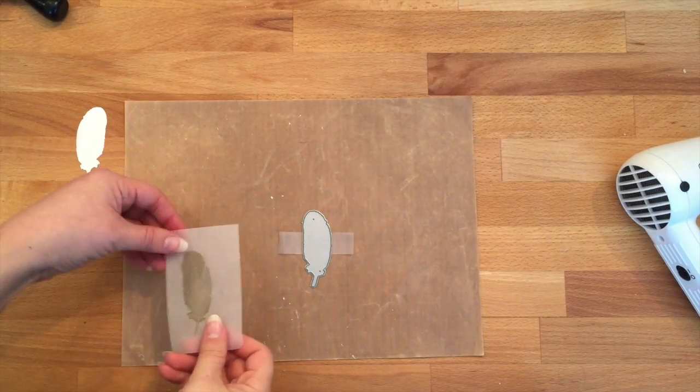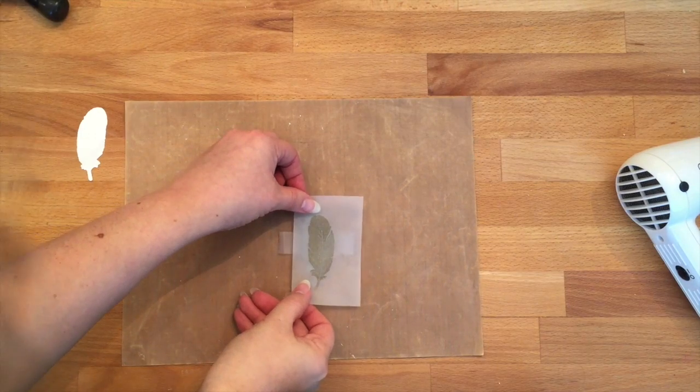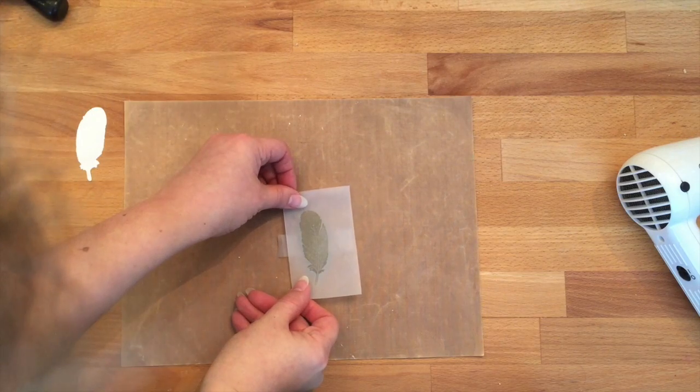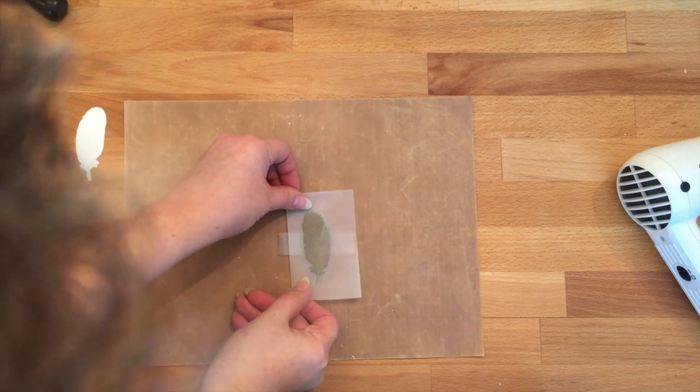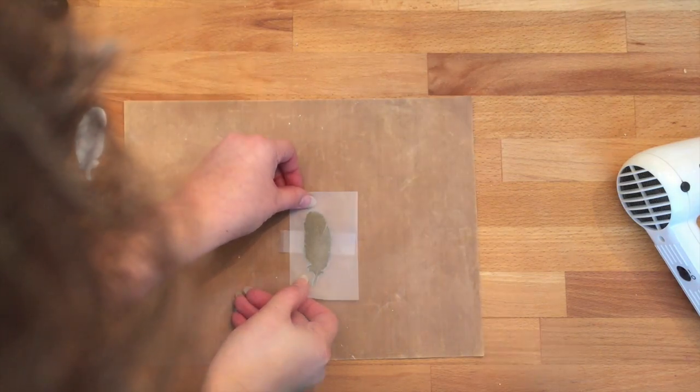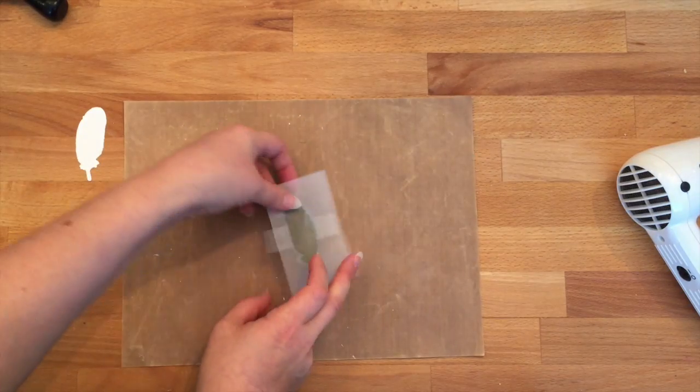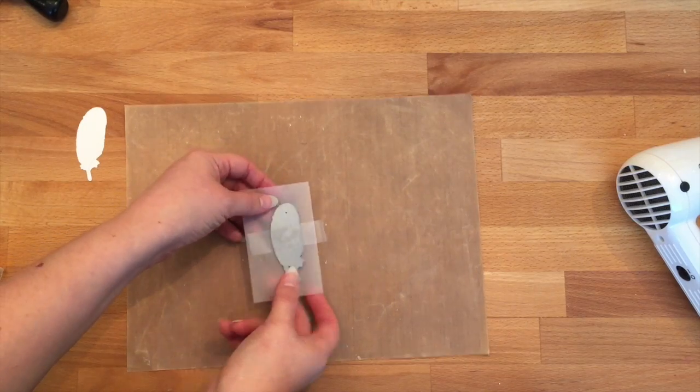When we're done, we can trim our vellum down so it's a little more manageable, then we're going to layer it on top of the die. You can see I have put scotch tape on the back side of my die and then put the vellum over top, and that scotch is just going to help keep things in place while we die cut.